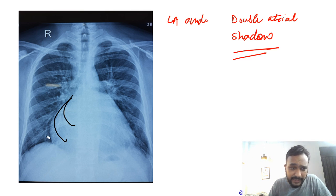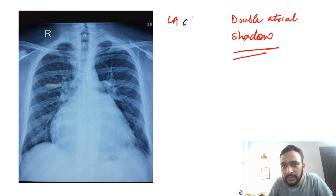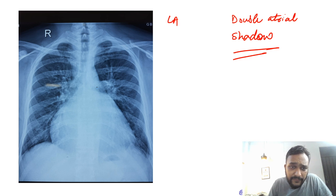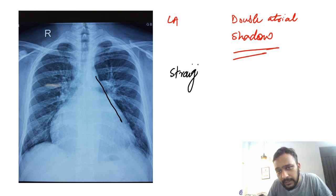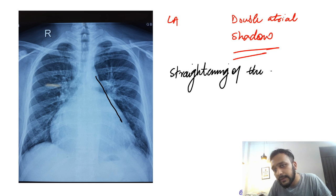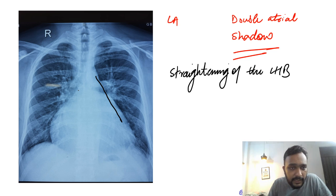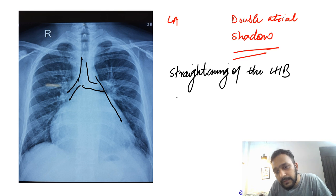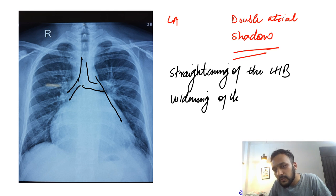Other signs we are going to see in a patient with left atrial enlargement include straightening of the left heart border. We are also going to see widening of the carinal angle.